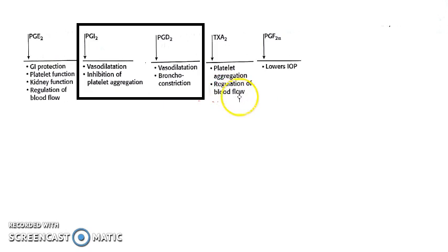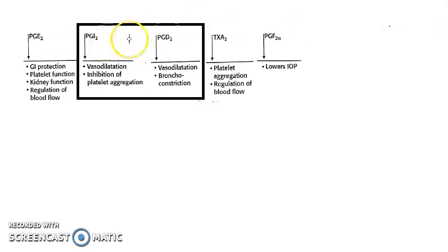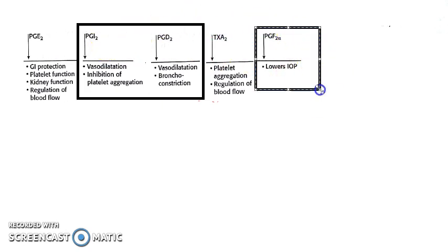Thromboxane A2 causes platelet aggregation and regulation of blood flow — this is actually an opposite effect to PGI2. Coming to PGF2 alpha, it lowers intraocular pressure and has been seen as a treatment for glaucoma.